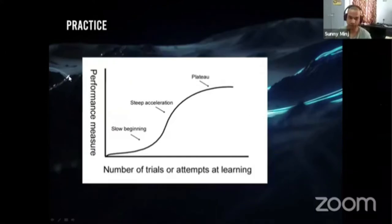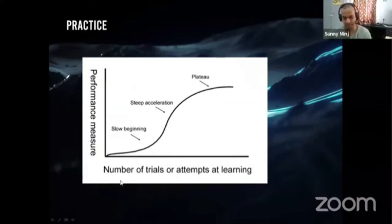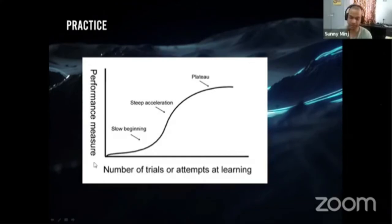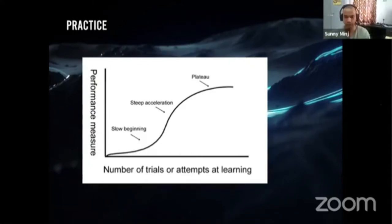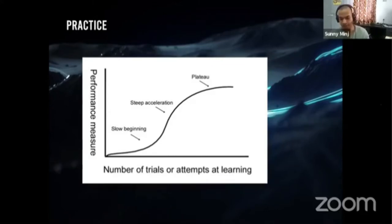Next is practice. This is a graph for performance measure versus the number of trials you'll be doing in your journey. In the beginning it will be very slow — if you open a software you'll find so many buttons and get confused, not knowing where to start. You have to find key points from the tutorials, like why they're pushing this button or using this tool.